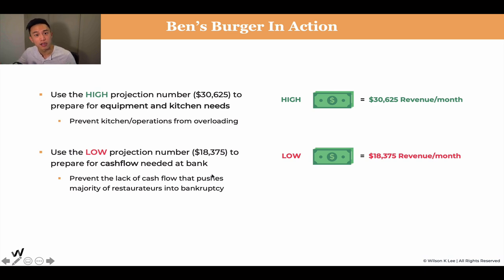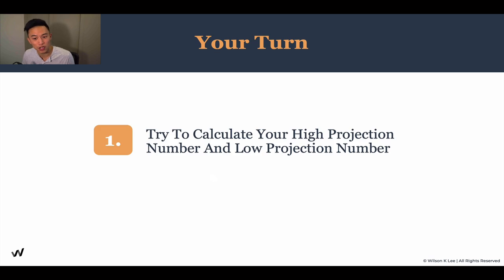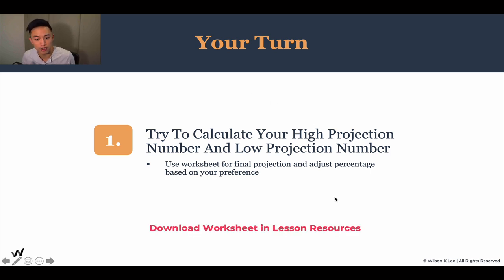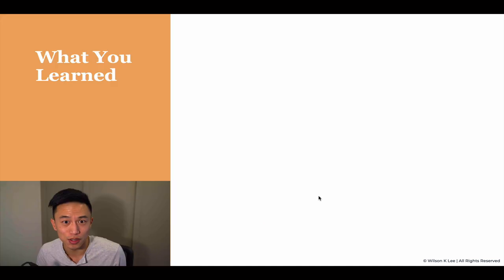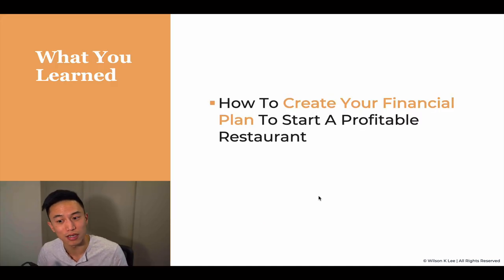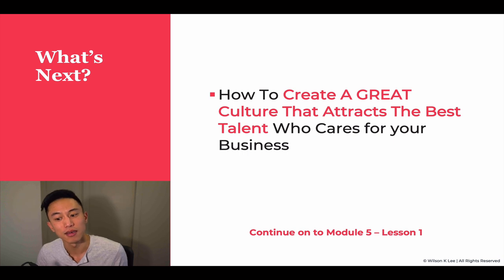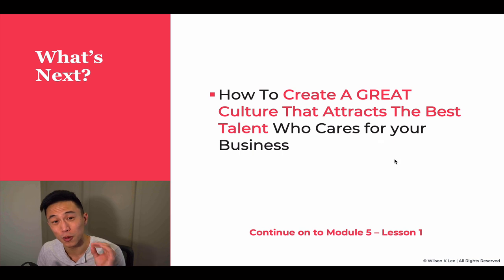That way, you're going to be ready to build a profitable restaurant. Now it is your turn to calculate your high and low projection numbers so that you're prepared for the worst and ready for the best. Use the worksheet below to calculate that and adjust the percentage based on your preference. In this lesson, you've learned how to create your financial plan — now go out there and start creating that plan. In the next module, we're going to learn how to create a great culture that attracts the best talent who cares for your business. I'll see you in the next module.